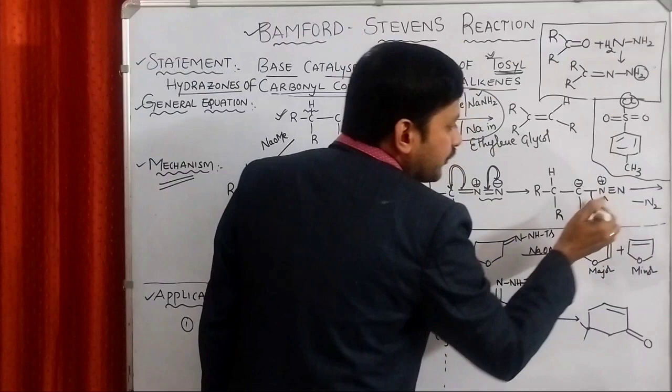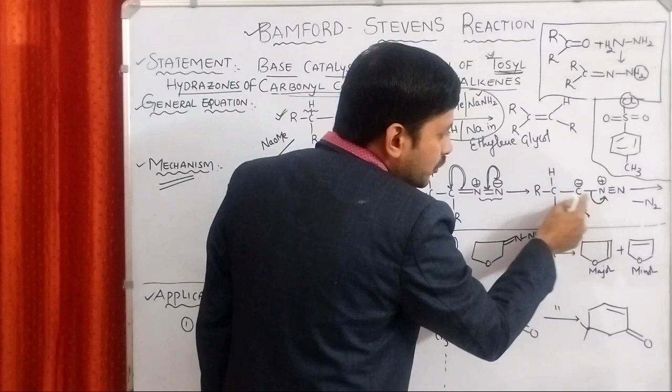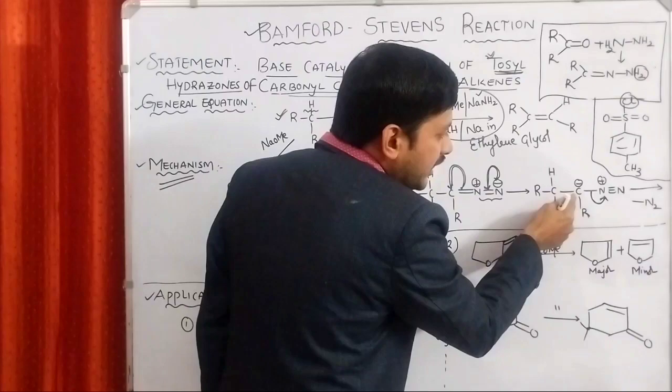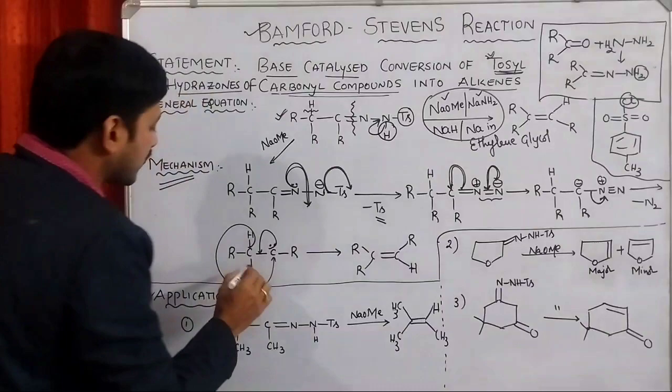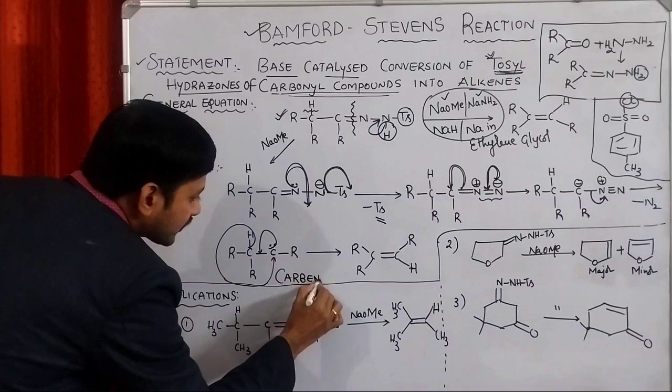If we remove the nitrogen in this way, the breaking of carbon-nitrogen bond is going to produce a positive charge on the carbon. Already negative charge is present. The positive and the negative both will form a lone pair. That is why we are coming up with an intermediate called carbene intermediate.